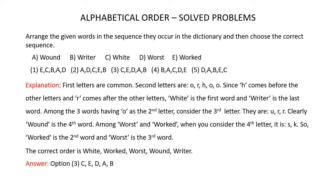When you look at these 5 words, you will see that the first letter W is common in all 5 words. So you have to consider the second letter. The second letters are O, R, H, O, and O. Since H comes before the other letters and R comes after the other letters in the alphabet series, clearly White is the first word and Writer is the last word.